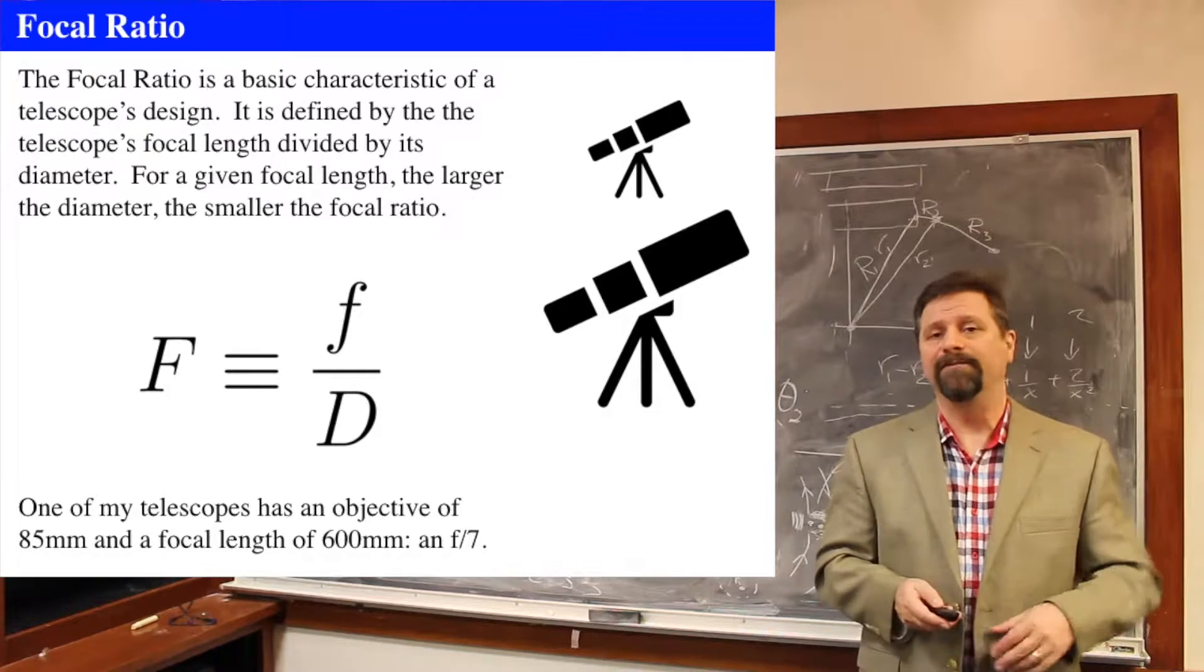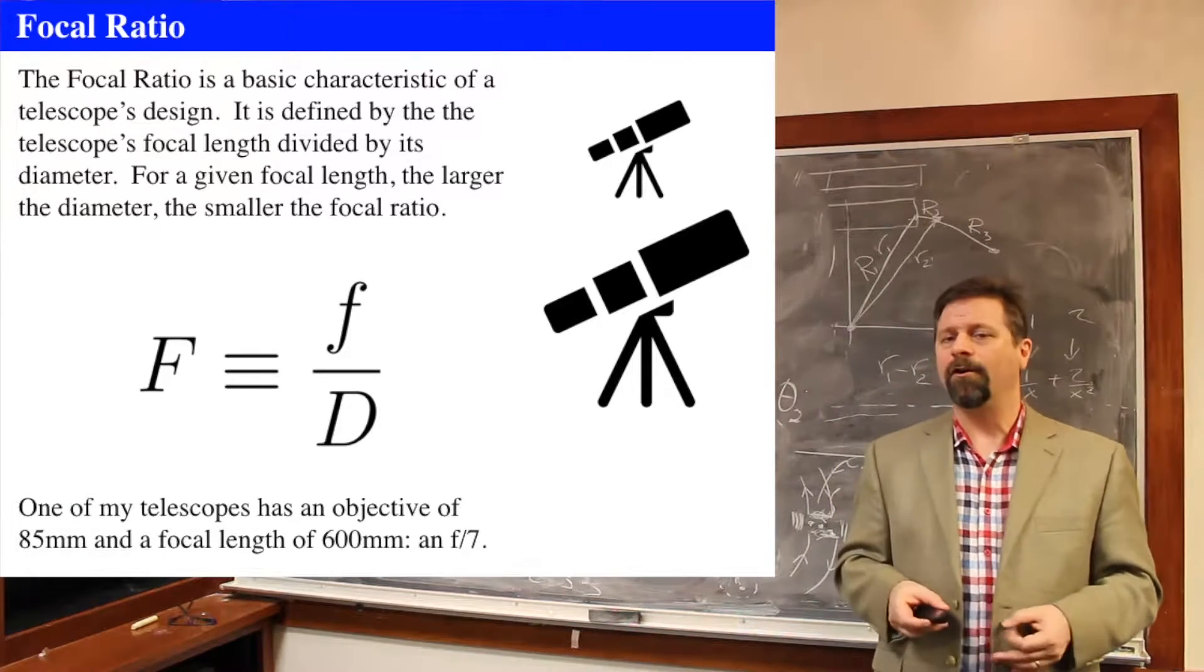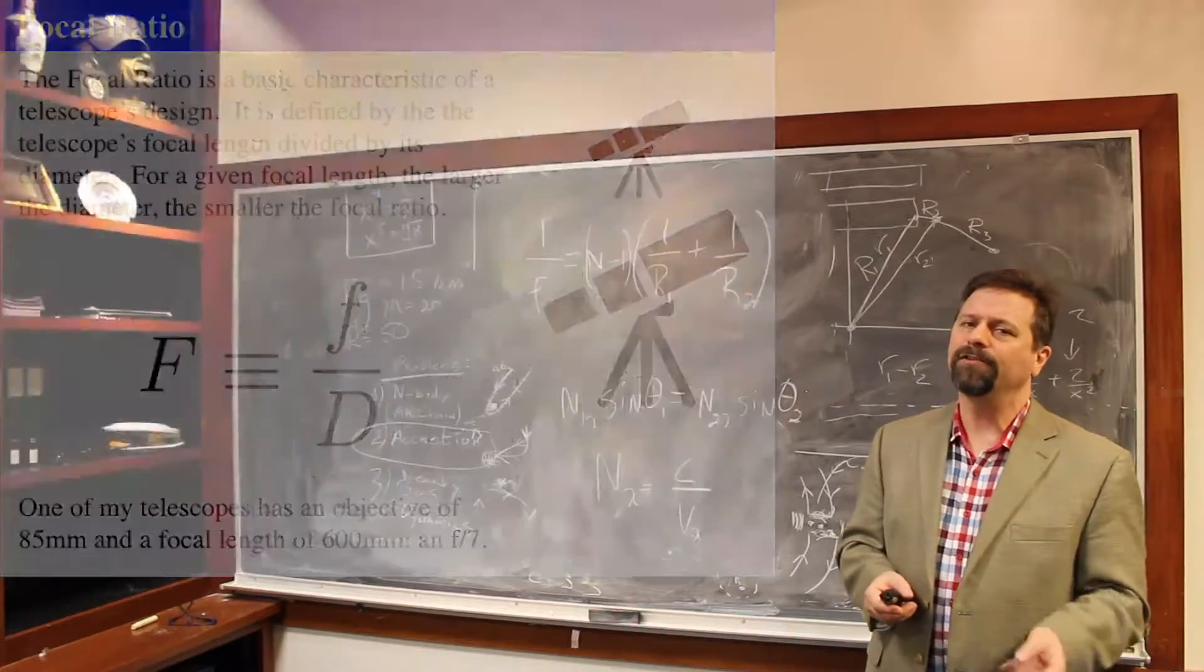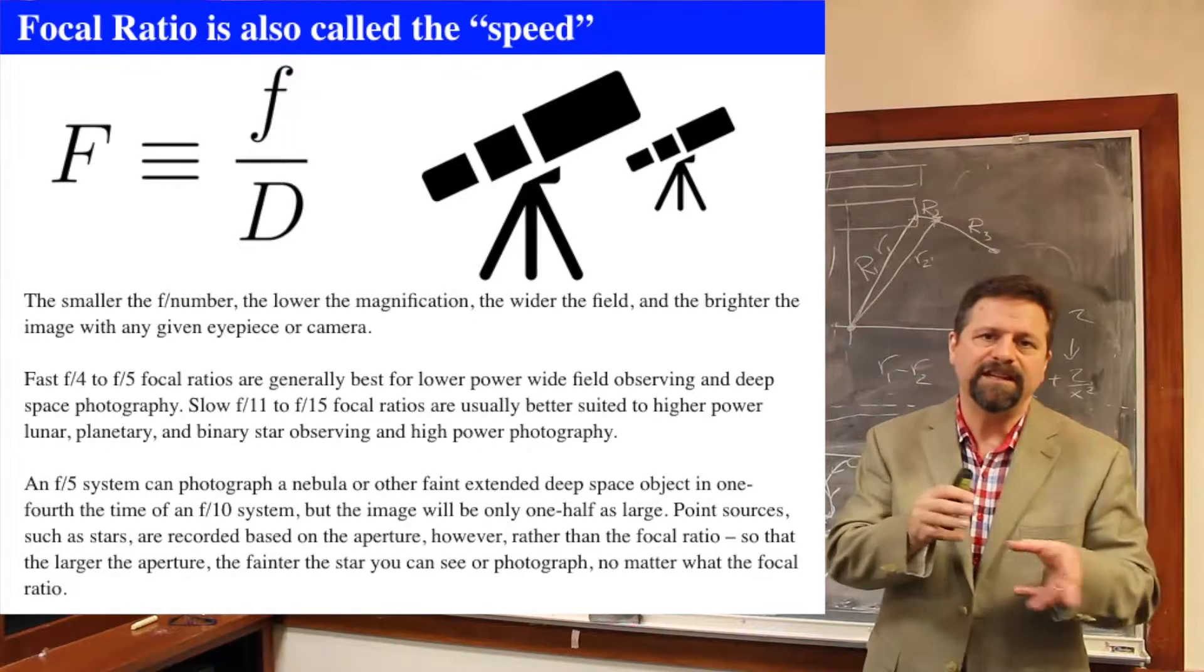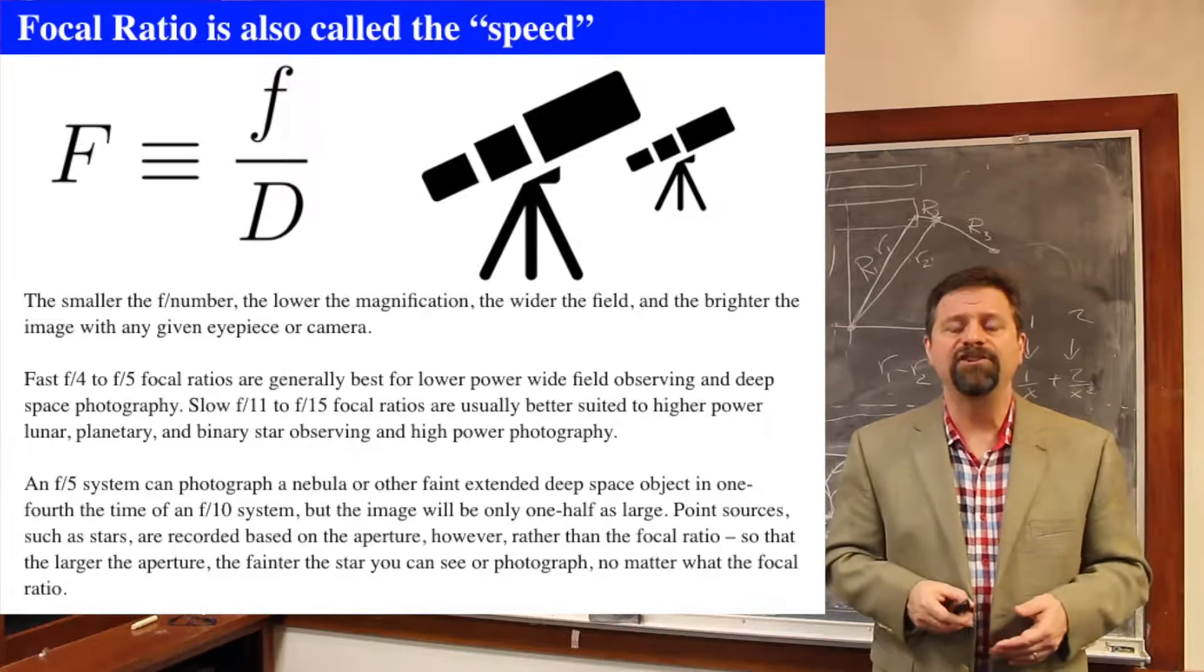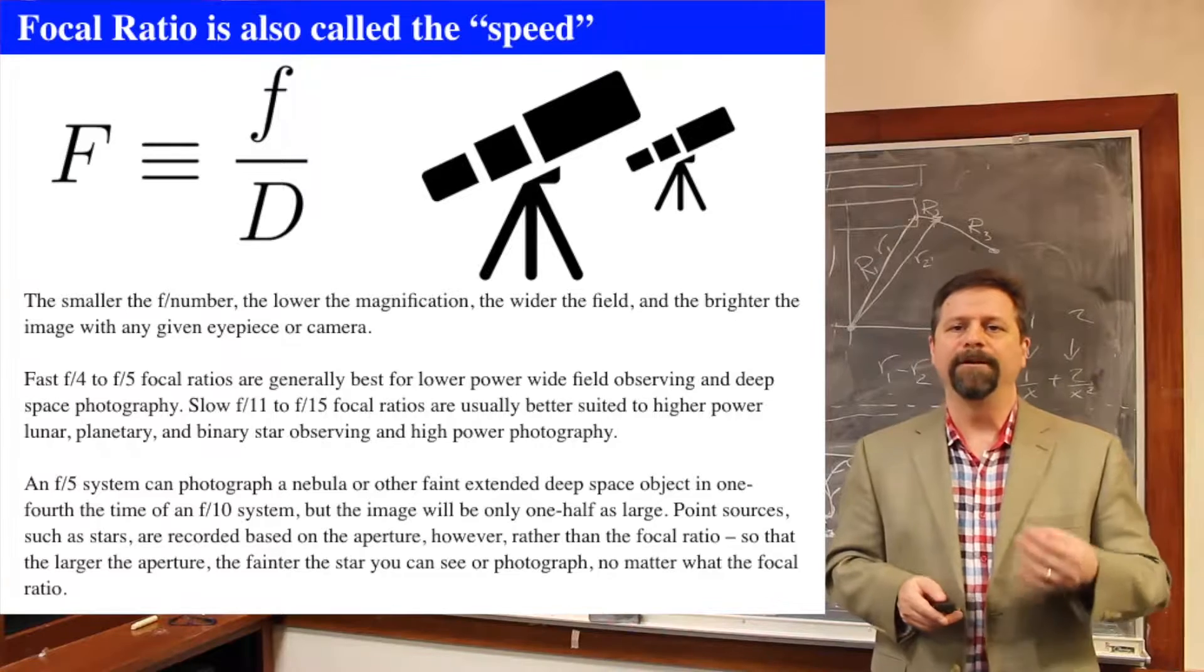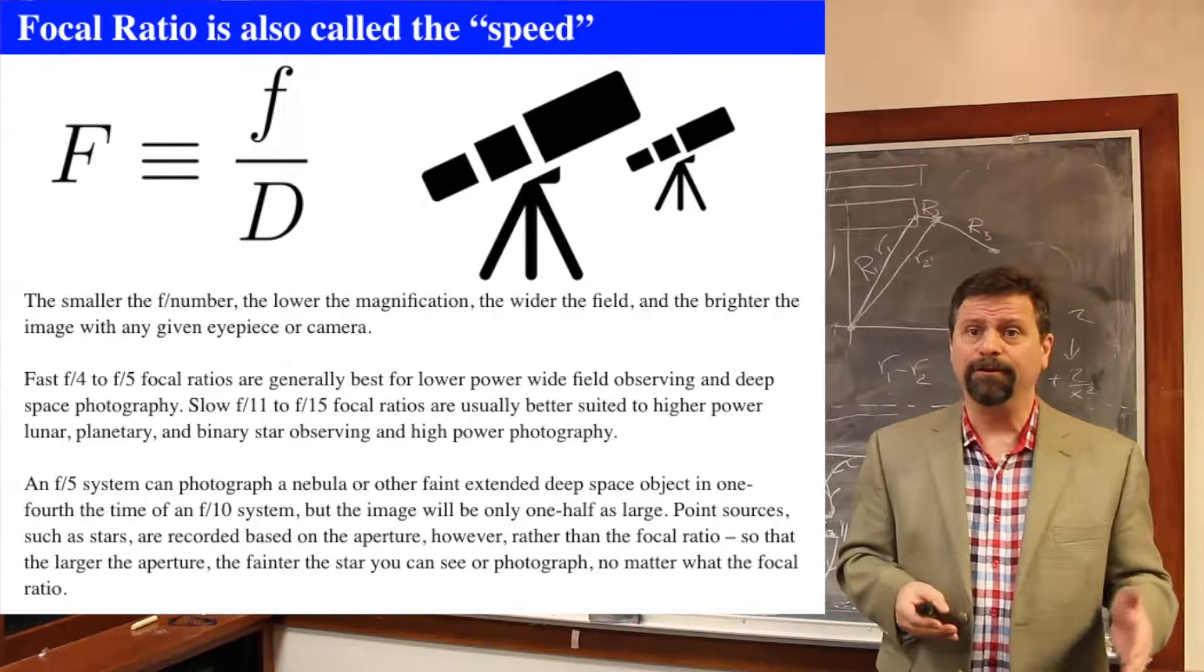The focal ratio can also be called the speed of the telescope. The smaller the F number, the focal ratio, the smaller the focal ratio number, the lower the magnification, the wider the field of view, and the brighter the image is with any given eyepiece or camera.